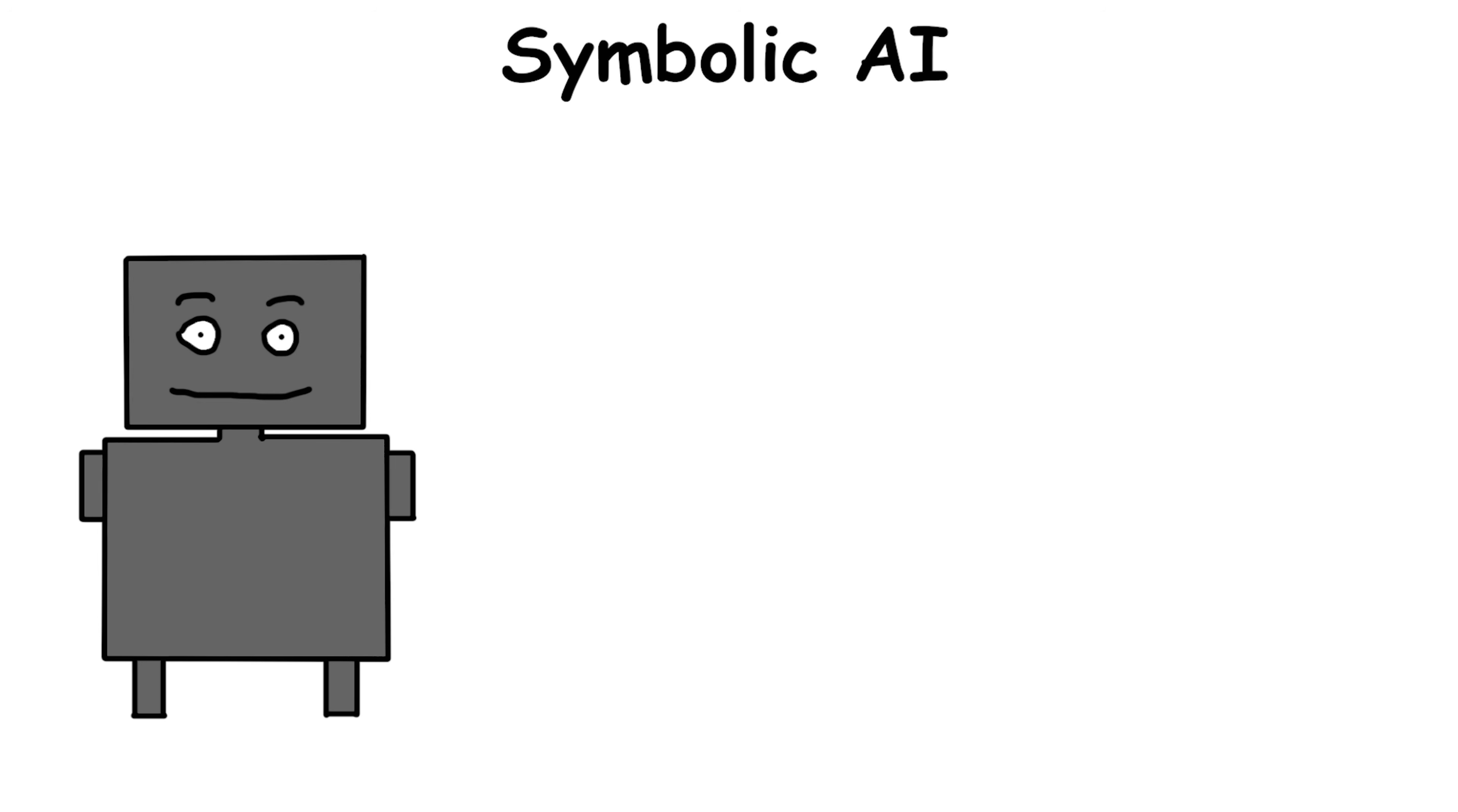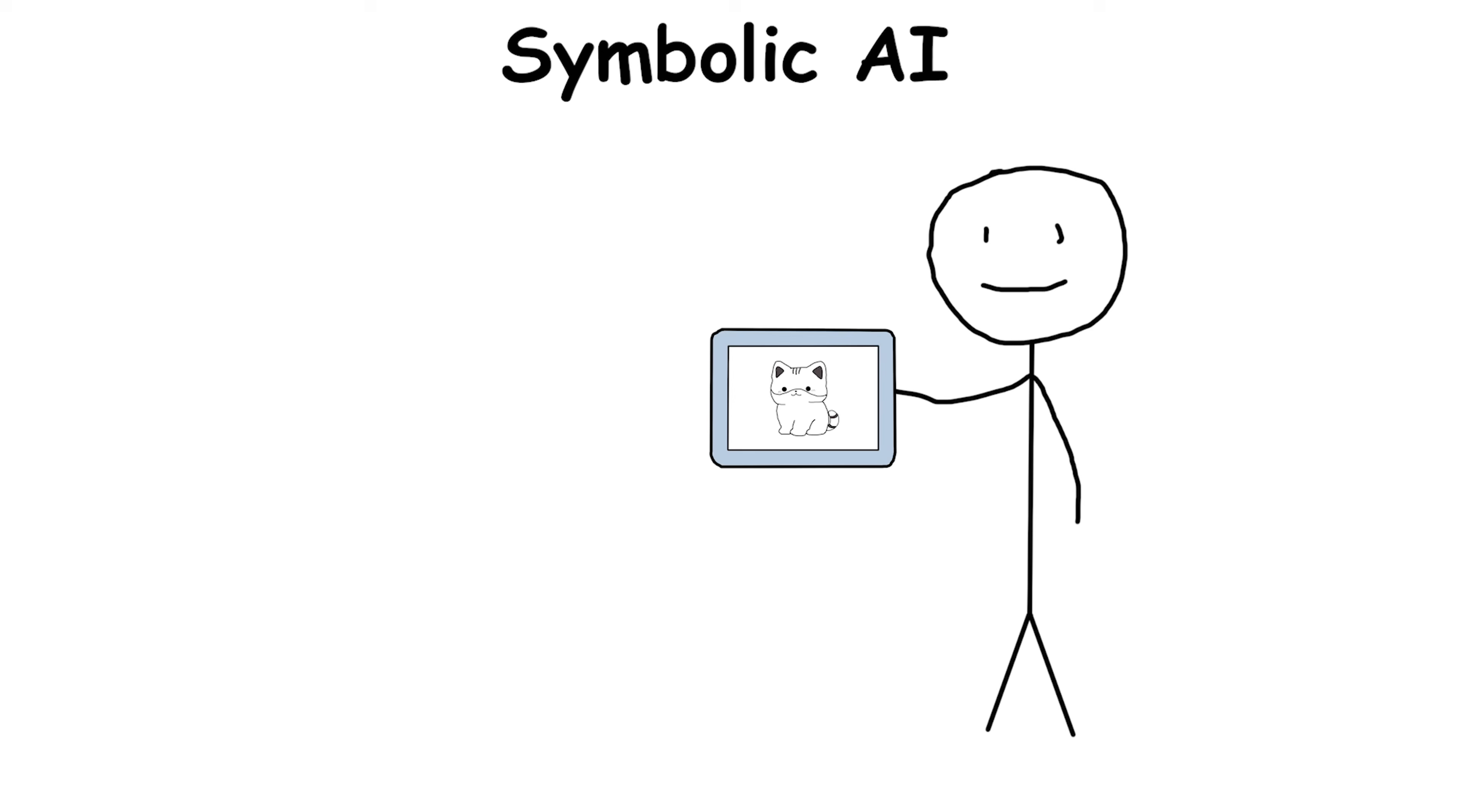Symbolic AI was like teaching a child to identify a cat using a checklist - whiskers, tail, meow - instead of showing pictures. If the cat lost its tail, the system couldn't recognize it.